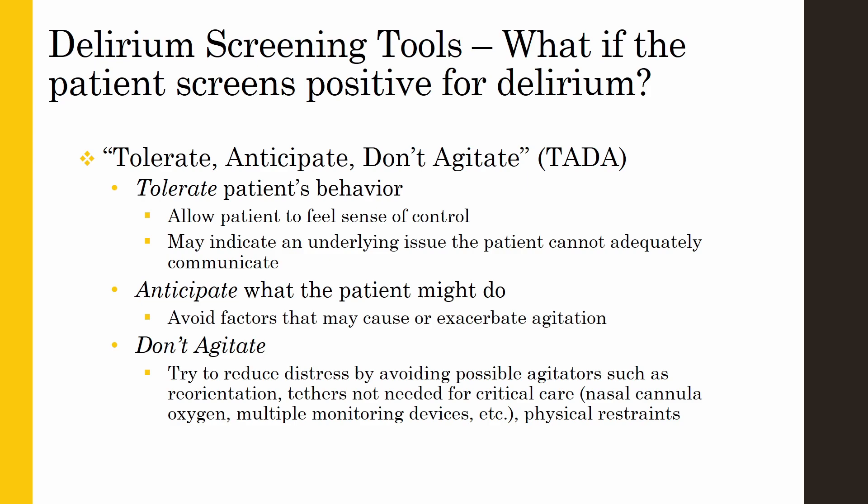The first step is to tolerate the delirious patient's behavior. They may try to remove their catheter or get out of bed without assistance, for example. Tolerating their behaviors will allow the patients to feel a sense of control and may also indicate that something is bothering them. The next step is to anticipate what the patient may do next — this is to avoid any factors that may cause or amplify agitation. Lastly, don't agitate the patient. Some agitators, such as physical restraints, are obvious. However, something such as reorientation could also be an agitator. Essentially, the goal is to de-escalate the patient. Dimming the lights or having family members or familiar objects at the patient's bedside may also help.